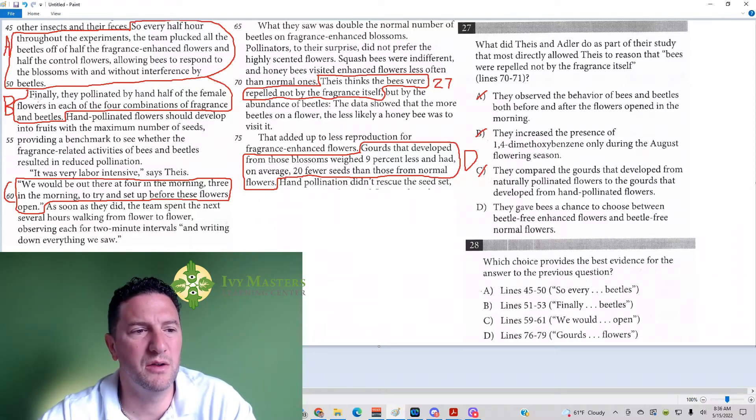Let's see, answer choice B: finally pollinated by hand half of the female flowers in each of the four combinations of fragrance and beetles. Okay, that's just, they're pollinating the flowers. Answer choice B is gone. Answer choice C: we would be out there four in the morning, three in the morning, and try to set up before the flowers open. It's not saying specifically anything about beetles.